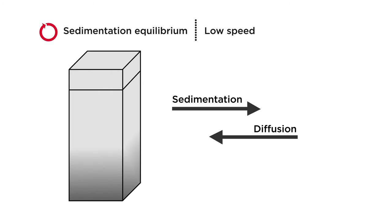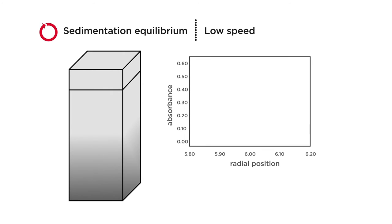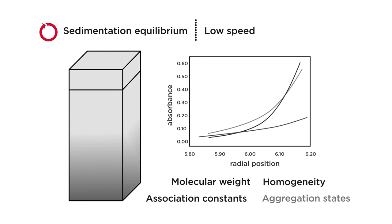The data is plotted as sample absorbance versus radial distance from the center of the rotor where the slope of the curve provides information on complex molecular weight. The distribution movement over time is used to calculate the molecular weight and homogeneity of the solution under study, as well as association constants and aggregation states.